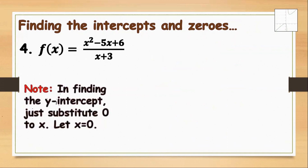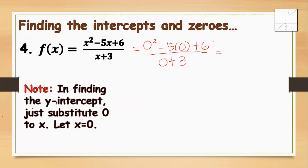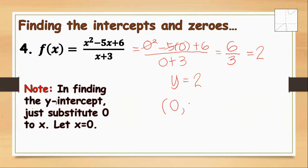Let's continue. To find the y-intercept, substitute 0 for x: 0 squared minus 5 times 0 plus 6, all over 0 plus 3. The numerator terms with x become 0, leaving 6 over 3. Since 6 divided by 3 equals 2, our y-intercept is y equals 2, or as a point, (0, 2).